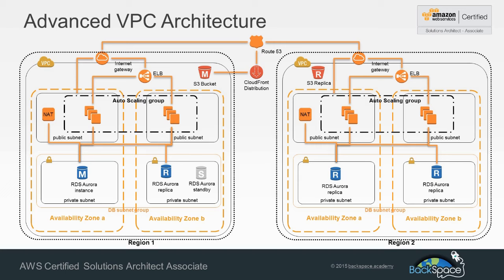This architecture would serve as the building block for a much bigger architecture. For example, we would use Amazon Route 53 to distribute traffic across multiple copies of this architecture depending on the geolocation of your end user. We'd create our VPC architecture in a region, use CloudFormer to create a copy, and then use cross-region replication for S3 to create an S3 replica in the new region.